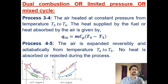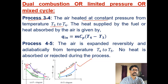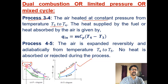Process 3 to 4 is a constant pressure heat addition, wherein temperature increases from T3 to T4. Volume increases from V3 to V4 — you can see from the diagram — because this is part of the expansion stroke. The combustion extends to point 4, and the heat supplied is Q = m·Cp·(T4 − T3).